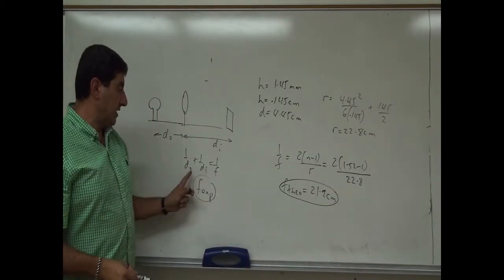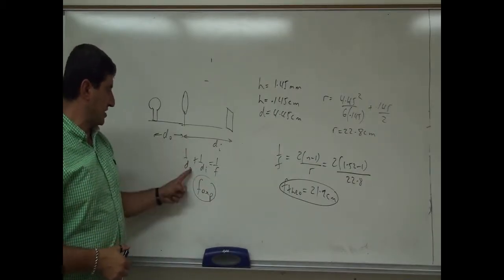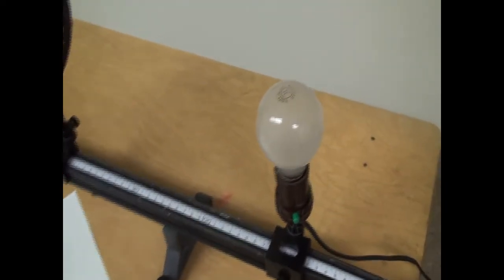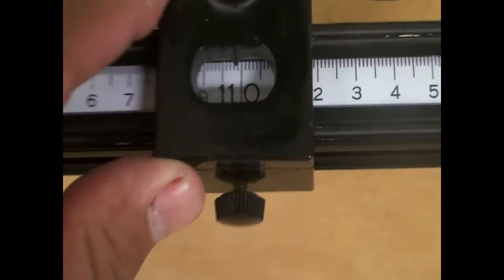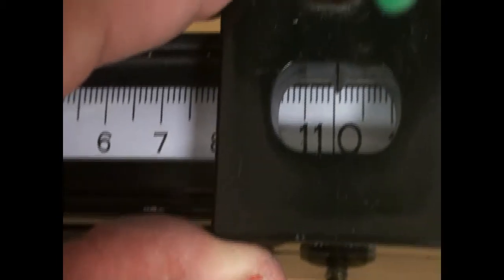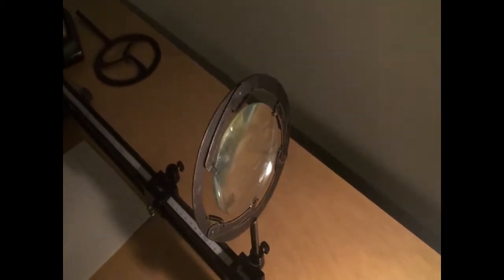The experimental focal length we'll find using 1/DO + 1/DI = 1/F, then compare to the theoretical result. You can see here my light source, and there's a ruler so I can read where the light source is. I'll put the light source at 110 centimeters. Over here is the holder for the lens — I can put the converging lens inside — and then there is my screen. Generally speaking, if the lens is close to the object, the image is very far and I have to move the screen farther to get a good image.